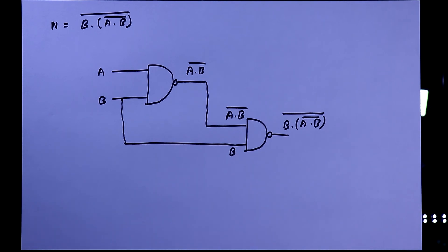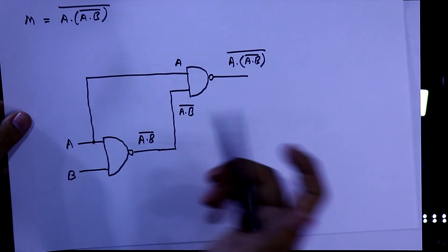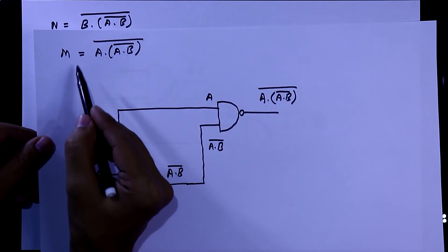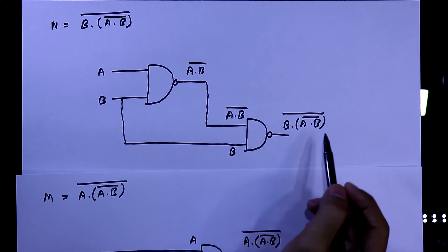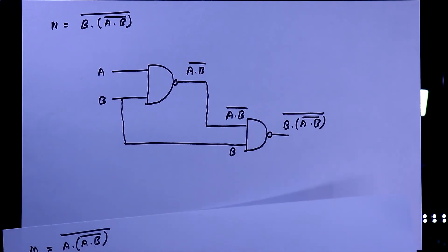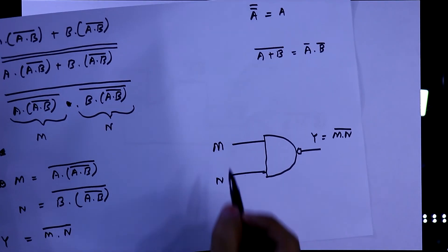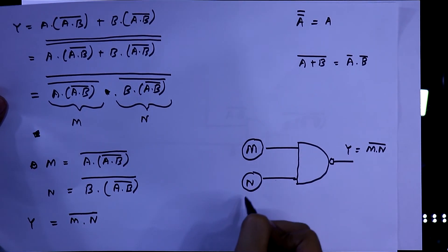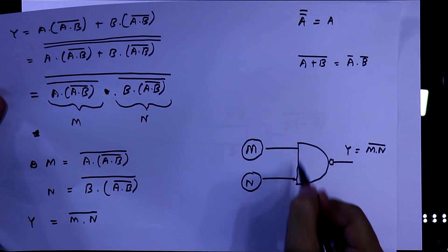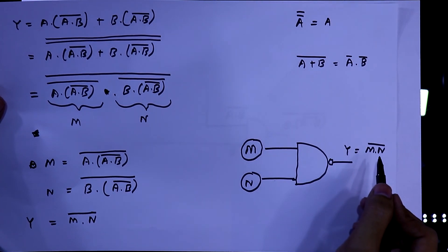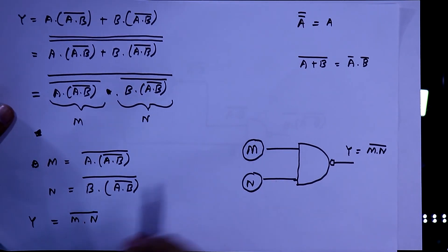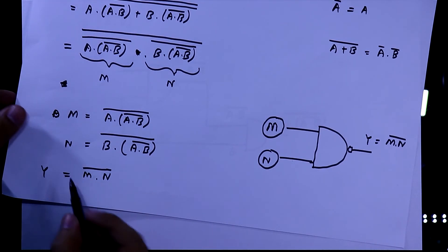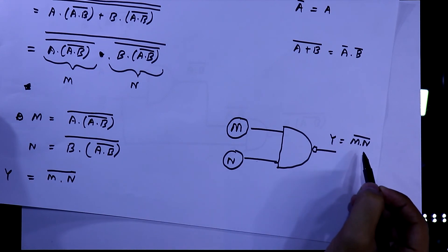Now we combine all of them to get the XOR output. We have the output of M and output of N. If we apply the NAND function to both M and N, we get Y equal to M dot N whole bar, which is our XOR gate output.